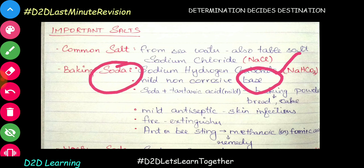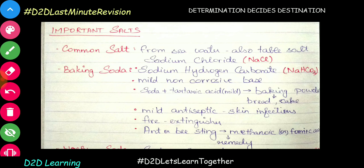You will get to the soda and it will form acid. Since you do the baking soda, it will neutralize the acid — so baking soda acts as a base. We mix baking soda with mild tartaric acid and we use baking powder. We use baking powder in cake and bread — it makes them soft and spongy. So baking soda is used in baking.